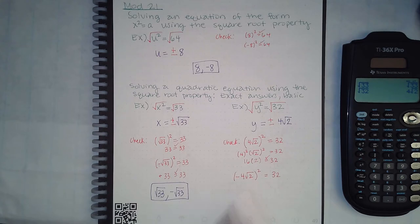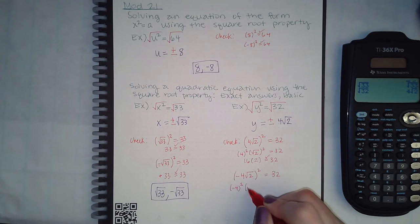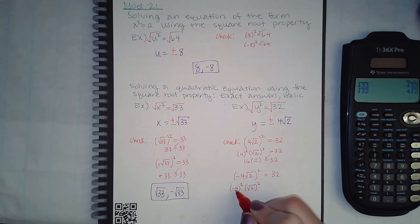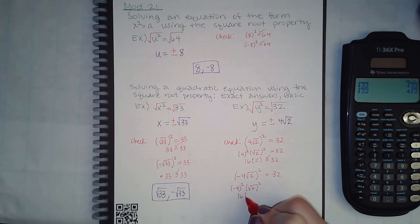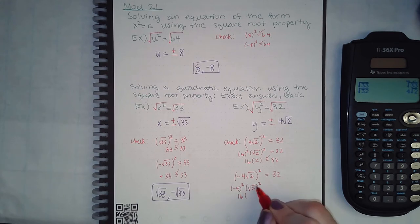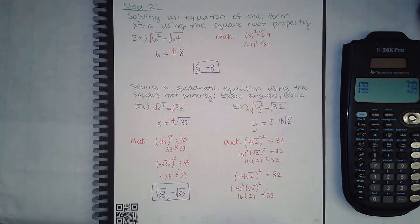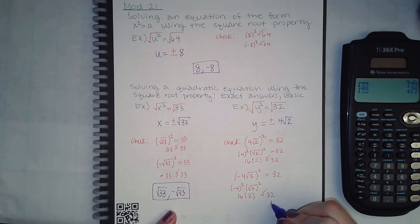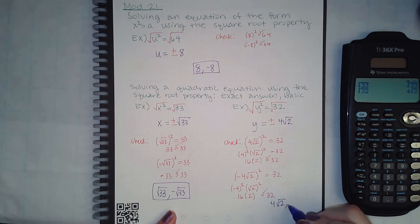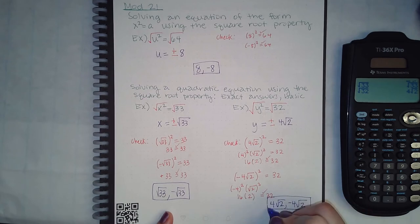For the negative version, negative 4 squared is still positive 16 because negative 4 times negative 4 is positive 16, and the square root of 2 squared cancels, again giving positive 16 times positive 2, which equals positive 32. Both answers check out. My solutions are 4 square root of 2 and negative 4 square root of 2.